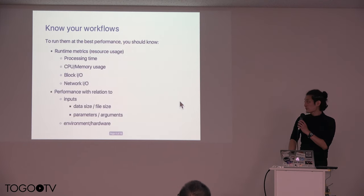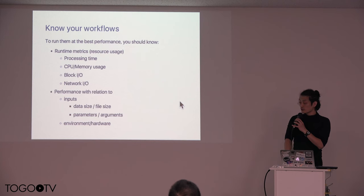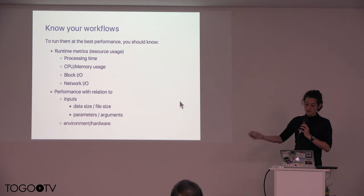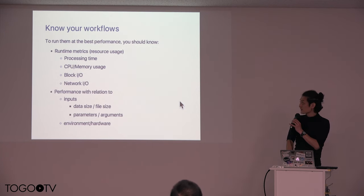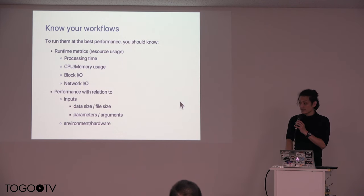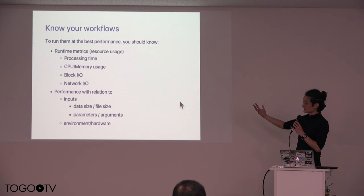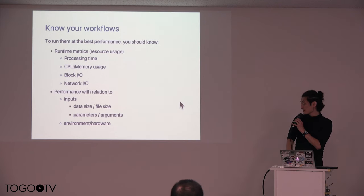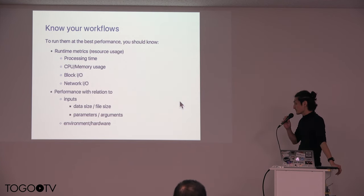To optimize the environment to run your workload, you should know about your workloads. To run them at best performance, you should know about the runtime metrics like processing times — how long it takes to run the whole workload — CPU and memory usage, storage, block IO, and network IO. You should also know about performance in relation to the inputs, such as small versus large data sizes, and different parameters like parallel execution arguments.